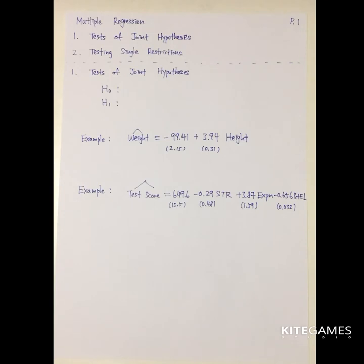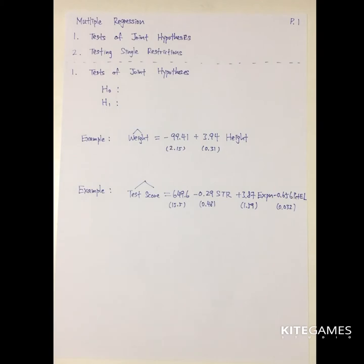That means we want to test whether beta1, beta2, beta3, up to beta k, they are all equal to zero. Second, we are going to talk about the testing of single restrictions — whether beta1 is equal to some kind of value in the regression model.